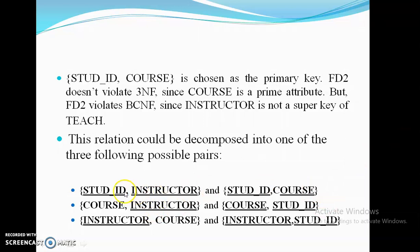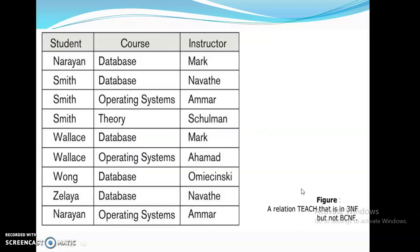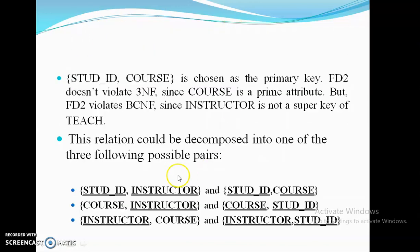For the Student-Instructor relation, Student ID and Instructor together form the primary key since both attributes can jointly identify a particular tuple. Similarly, for Student ID and Course: Narayan is taking Database and also Operating System, and Smith is also studying Database. So Student and Course together identify a particular tuple — Narayan-Database, Narayan-Operating System, or Smith-Database.